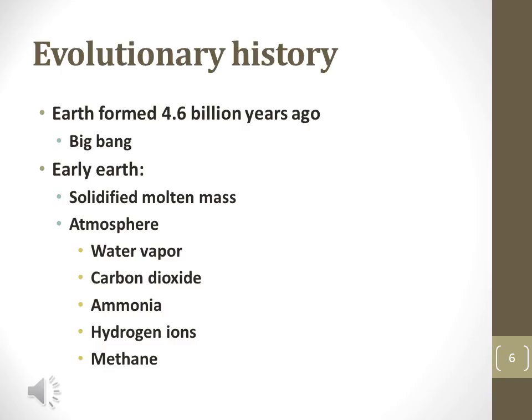Evolutionary history is measured in extremely long periods of time. The universe was formed over 15 billion years ago in an event known as the Big Bang. The Earth was formed approximately 4.6 billion years ago. Early in its history, Earth was a molten mass with an atmosphere of water, carbon dioxide, ammonia, hydrogen ions, and methane.